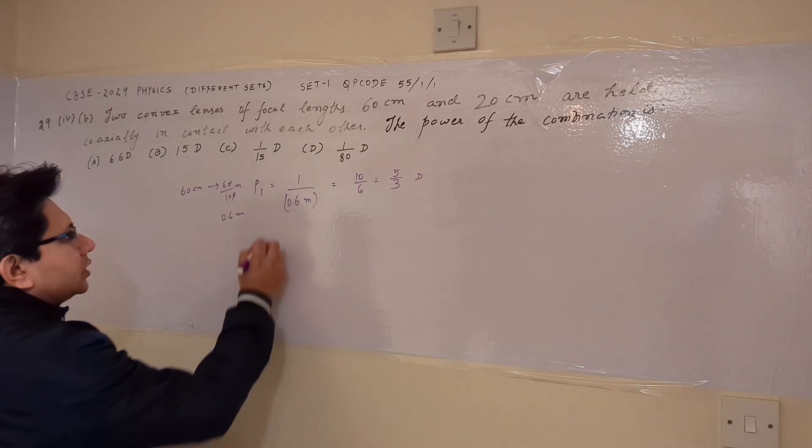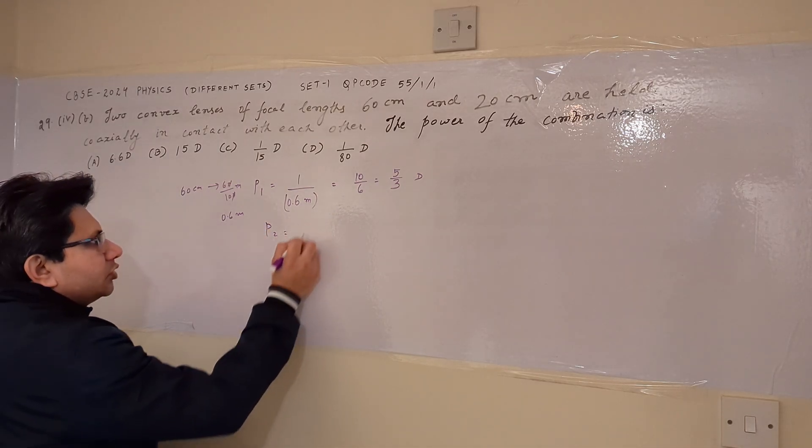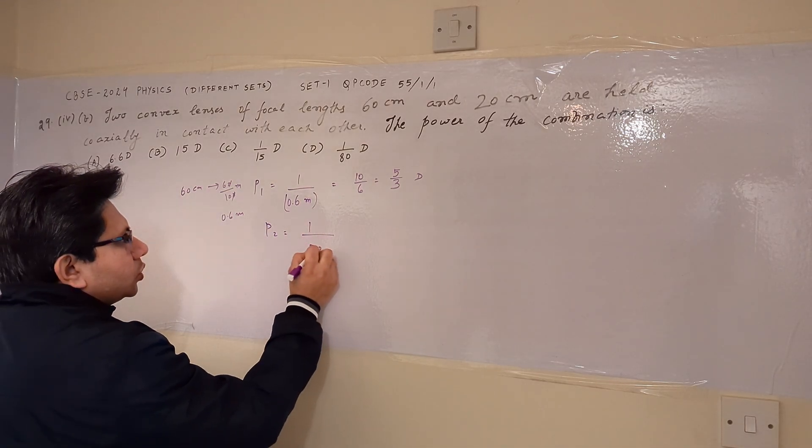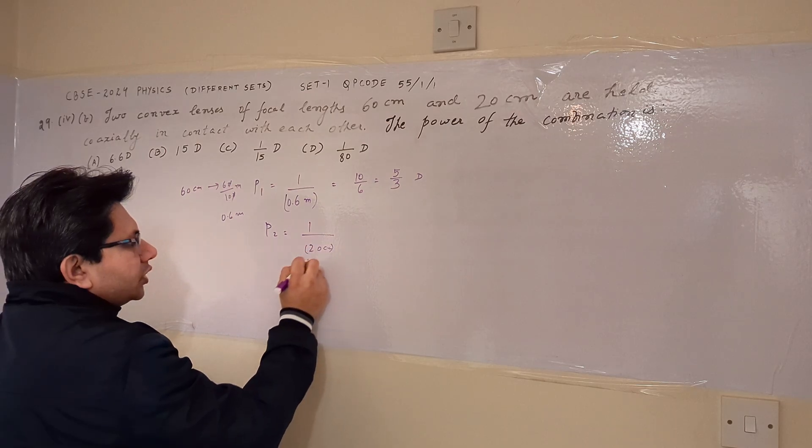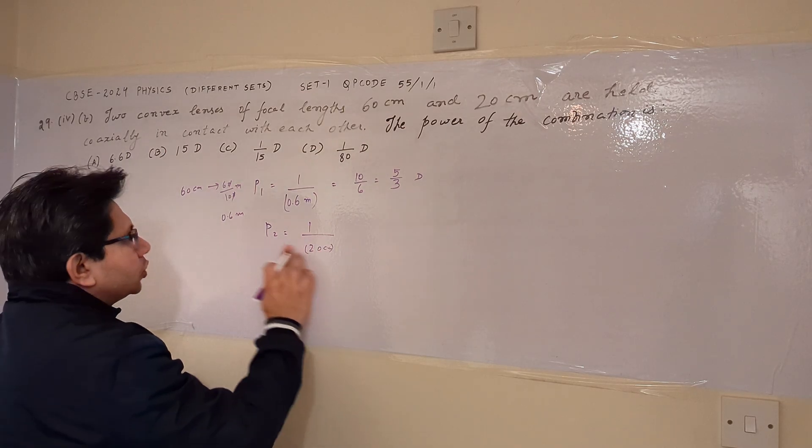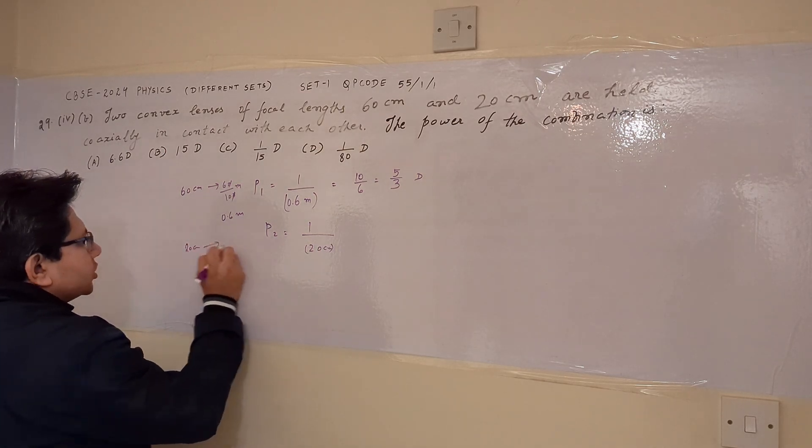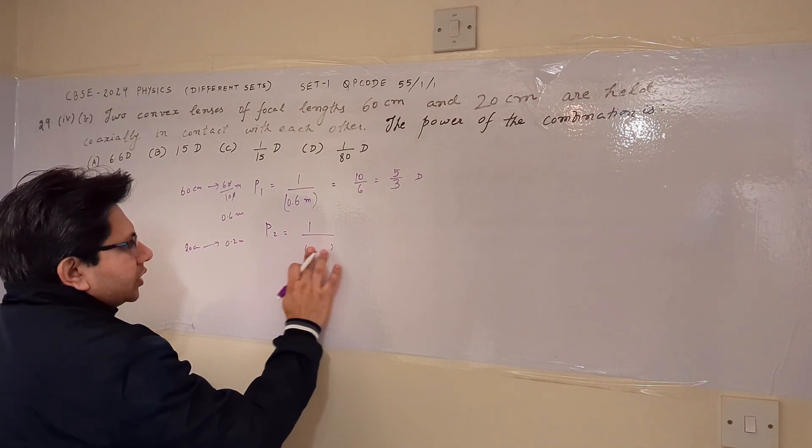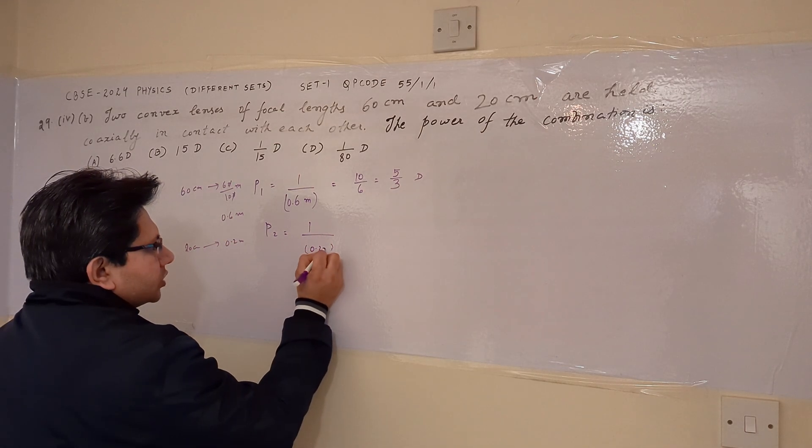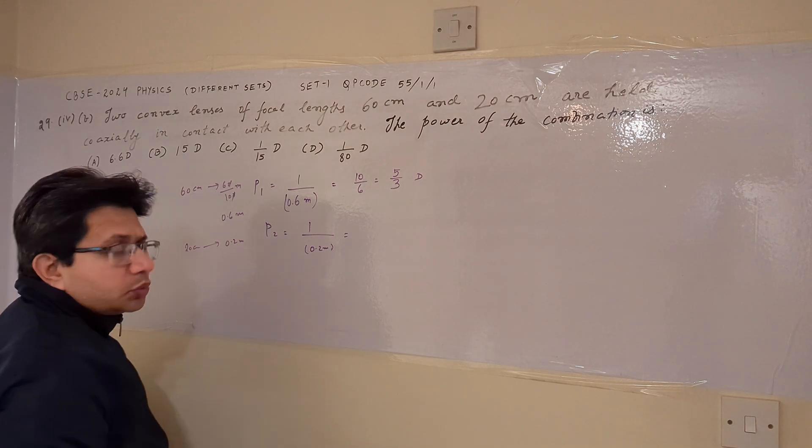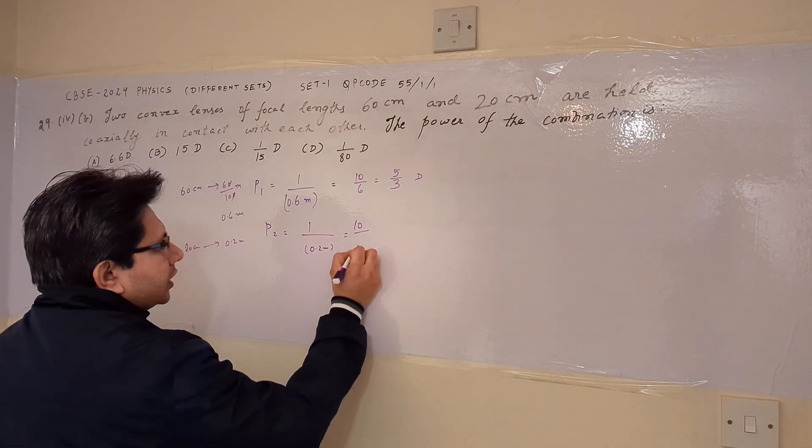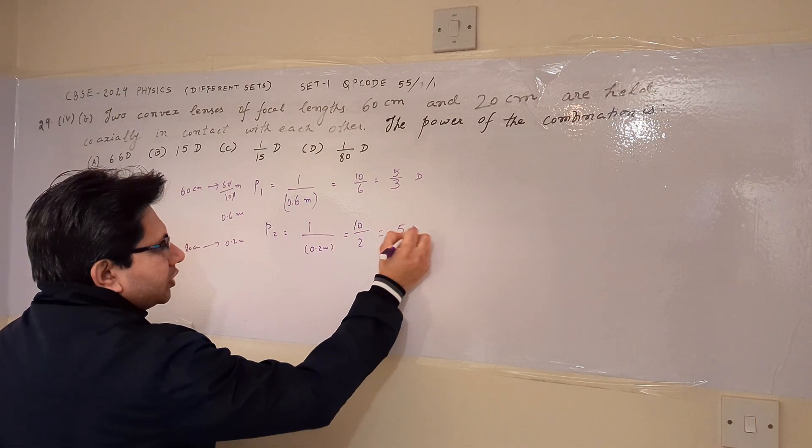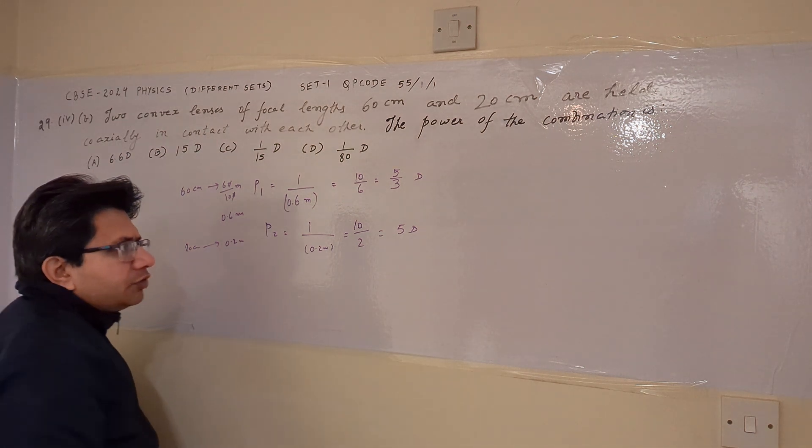And the second lens power is given by 1 upon 20 centimeter. We convert it into meters first, so 20 centimeter corresponds to 0.2 meters. So we put this value here as 0.2 meters, and after solving this, we get this value as 10 upon 2, which is equal to 5 diopter.